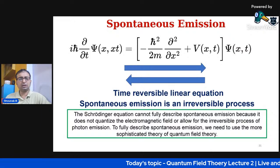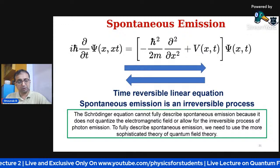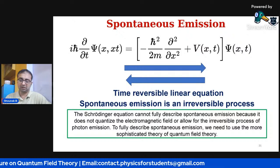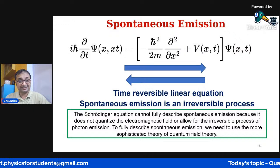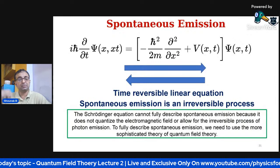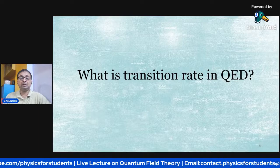Classical mechanics does not allow any system to be irreversible — Schrödinger's equation is a time-reversible linear equation, meaning you can go back. On the other hand, the issue we are dealing with is spontaneous emission, which is an irreversible process. Once it is emitted, it is emitted — it cannot go back. Schrödinger's equation measures what is a reversible system.